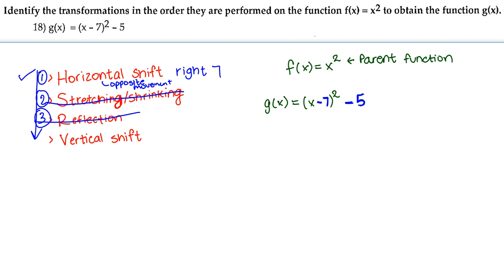The fourth possible transformation is a vertical shift, which refers to the number being added or subtracted outside the parentheses. We have a negative 5 right outside here, which means we're going to go down 5. Vertical shift does not have opposite movement — it does exactly what it's told. If it's negative 5, it goes down; if it's a positive number, it goes up by that amount.